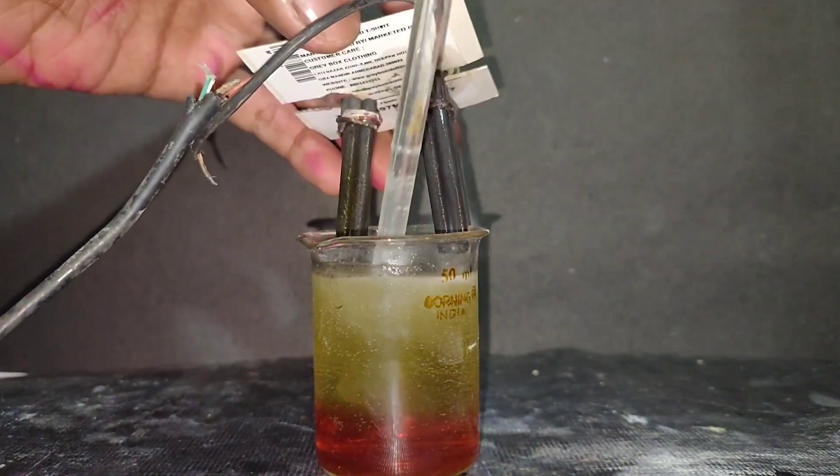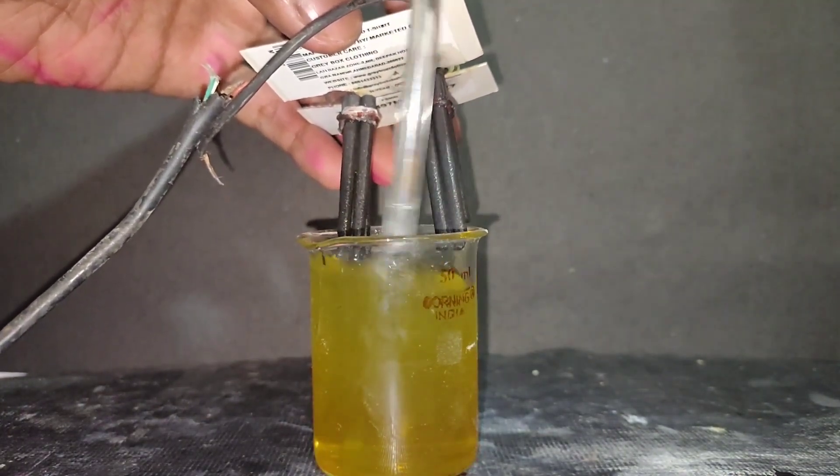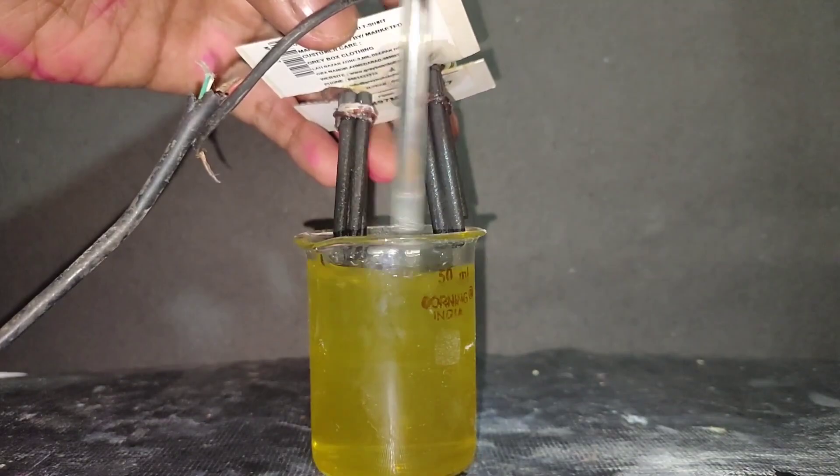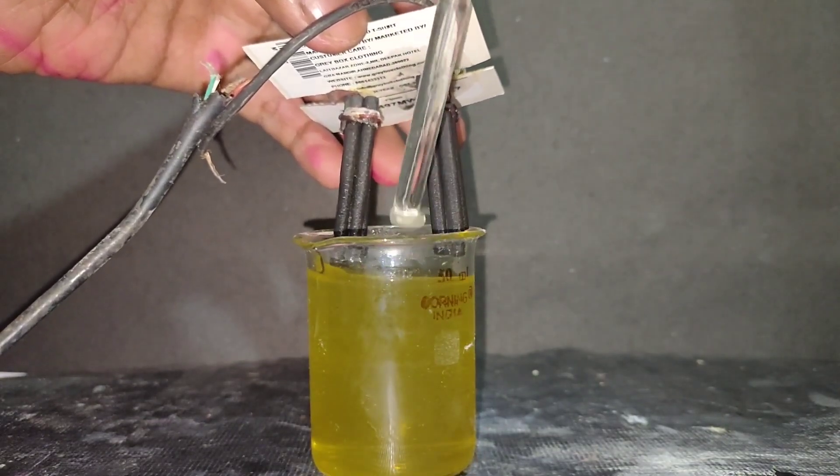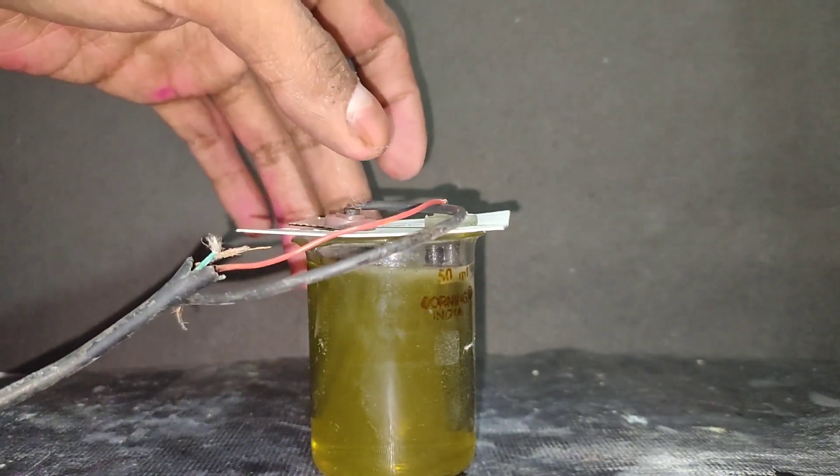As you can see here, bromine is formed and it settles in the bottom due to high density. When I stirred the solution, the orange color of bromine disappears because it reacts with potassium hydroxide which is formed in this reaction to form potassium hypobromide.